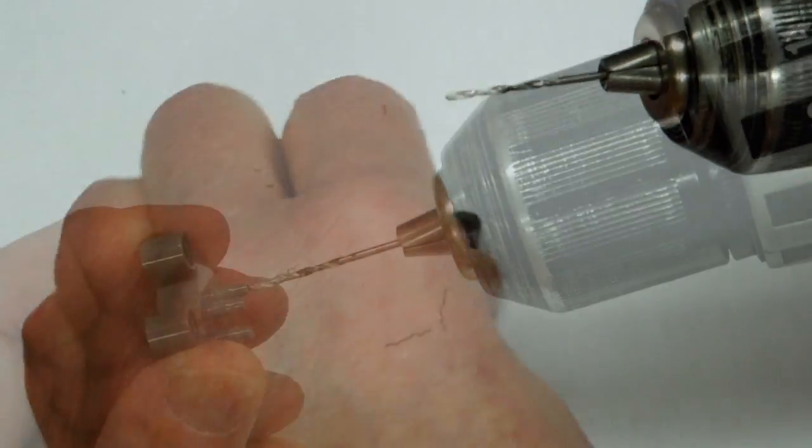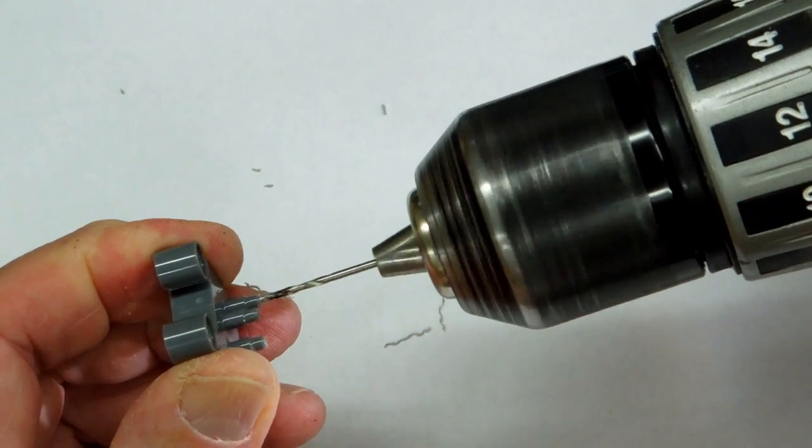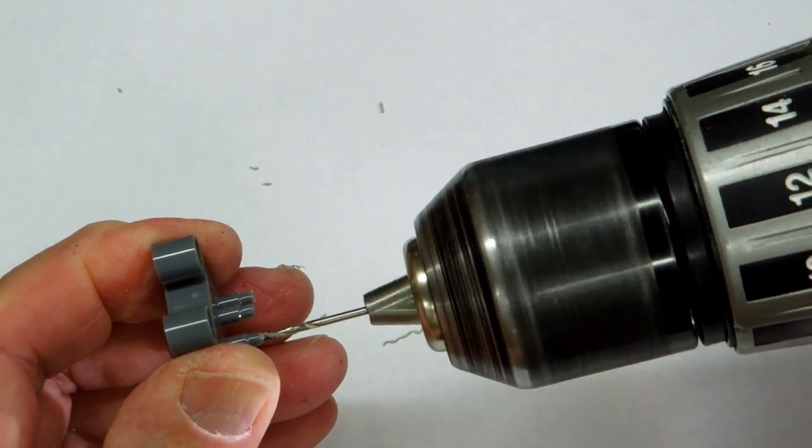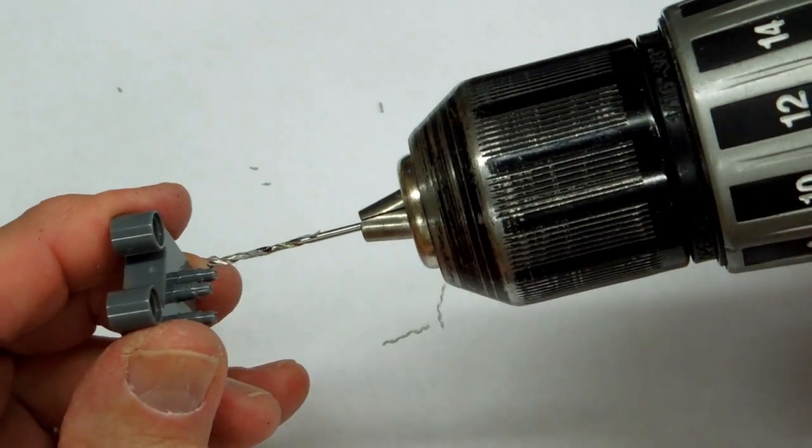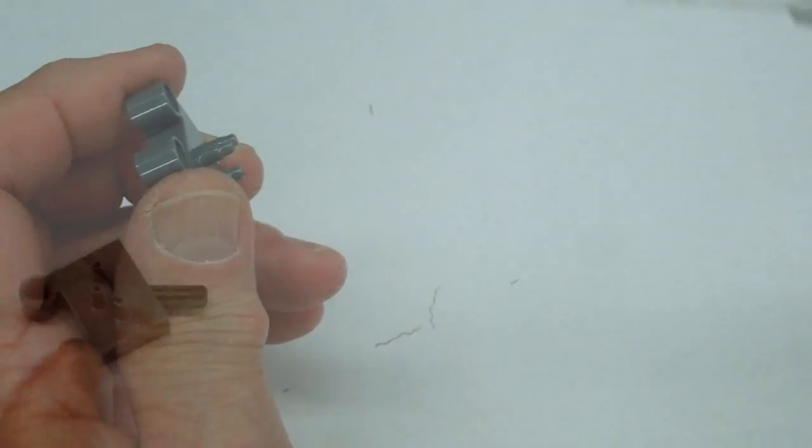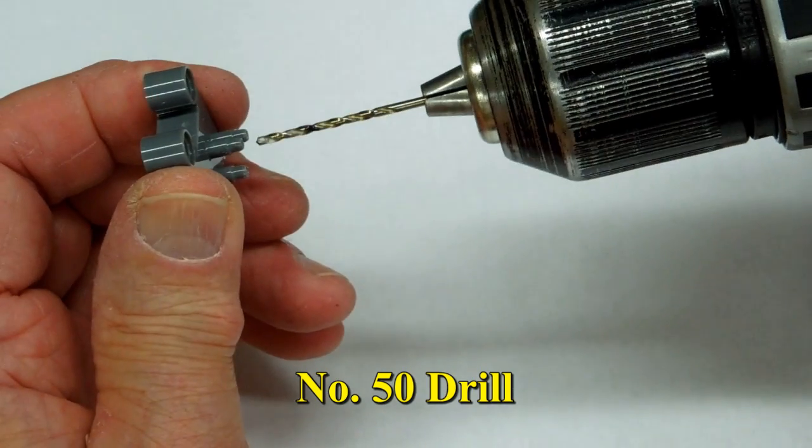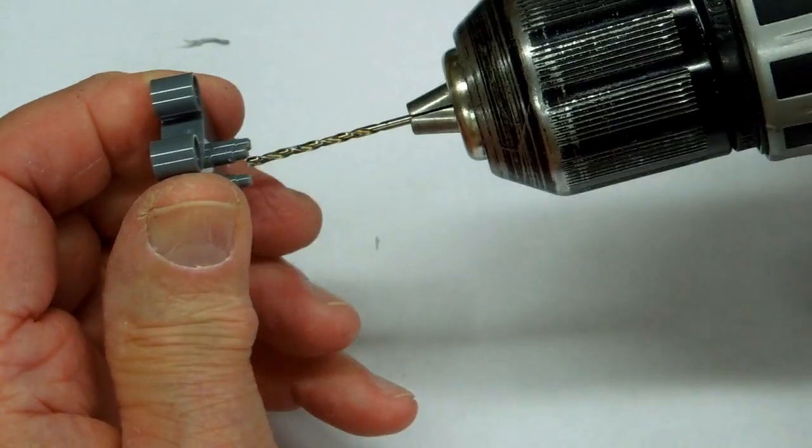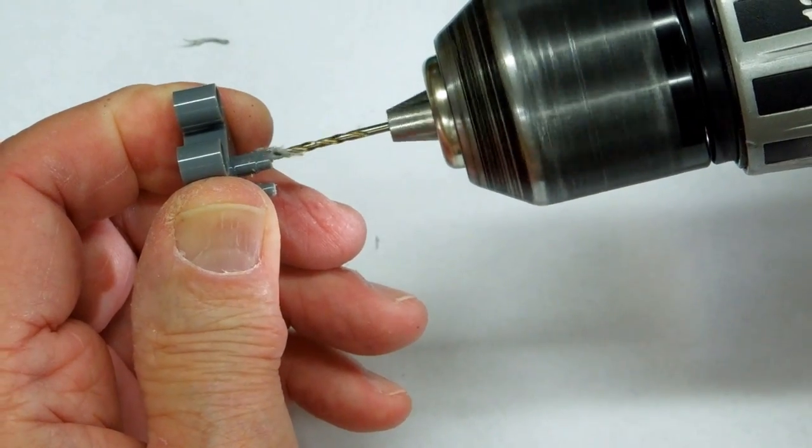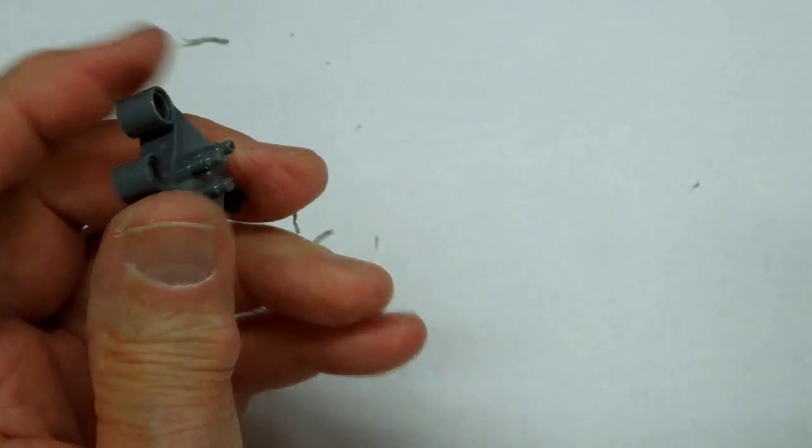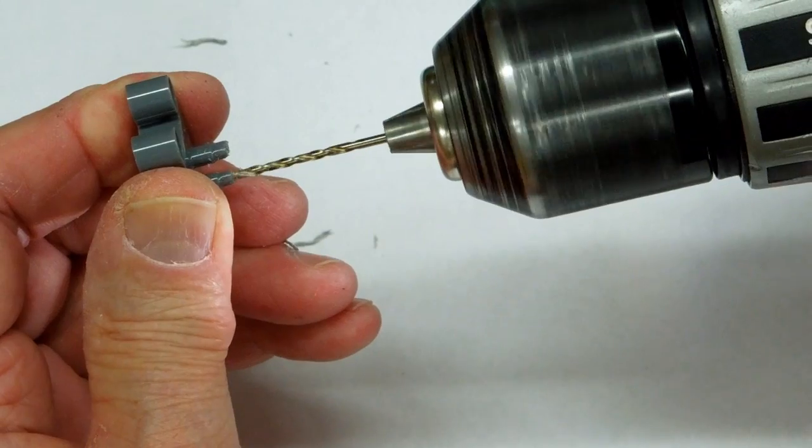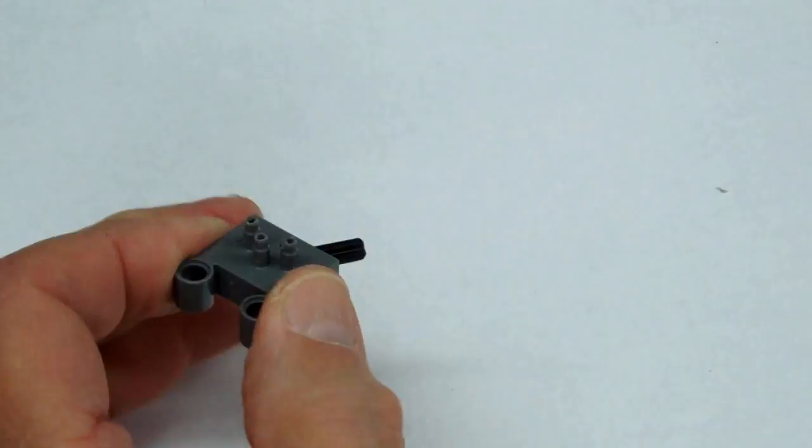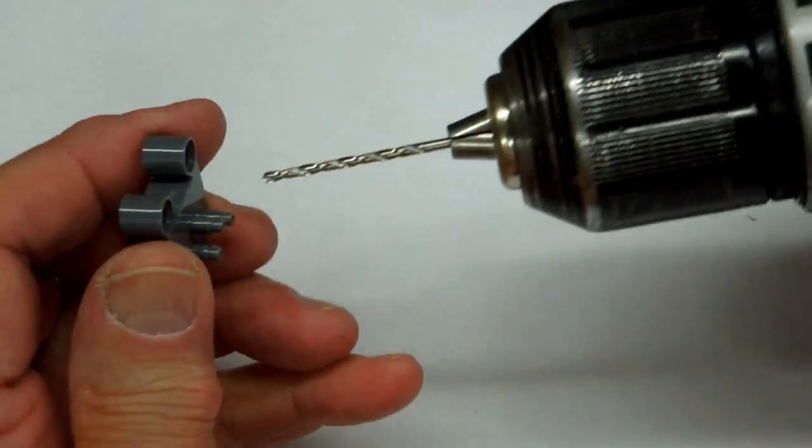You can see that bit was clearing the plastic. The next bit is a number 50. Now I'll drill it to the final diameter, which is a number 46, or .081 inches.